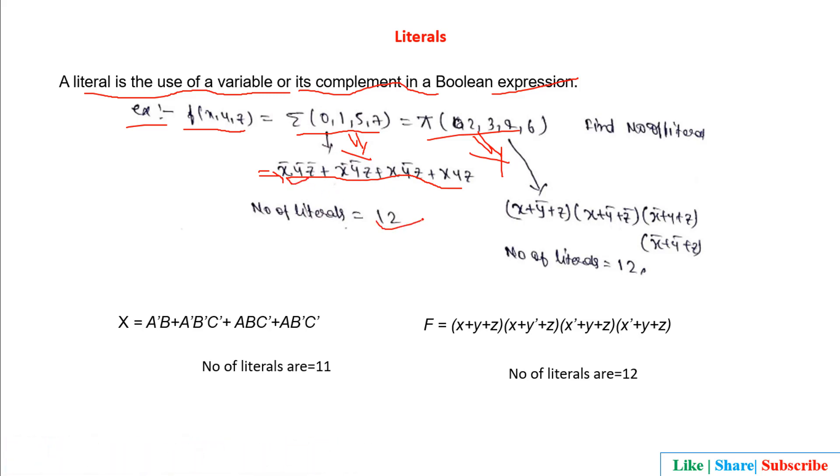Now in this section, you will see you have to just count the variables which may be in the complement form or not. One, two, three, and then three, three, three, so it is all twelve. The number of literals will be twelve.